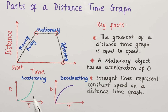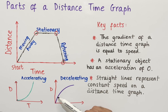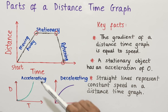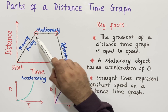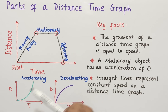We can also have curves on a distance-time graph. The first example shows a curve representing acceleration — as time increases, the distance gets larger and larger at an increasing rate. In the second graph, as time increases the rate at which distance is increasing slows down, and so this represents deceleration. We can have lots of combinations: objects moving away, remaining stationary, returning, accelerating, or decelerating on distance-time graphs.